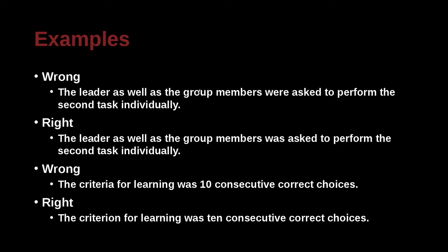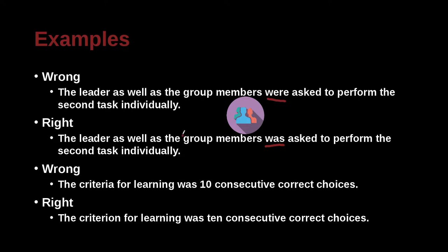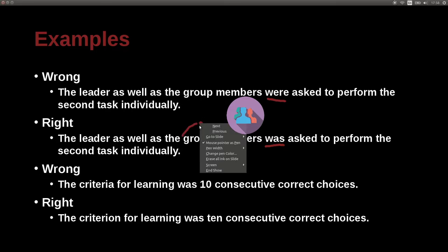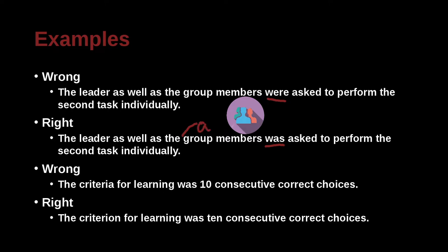'The leader as well as the group members were asked to perform the second task individually' is wrong. The correct version is 'The leader as well as the group members was asked.' You might think: it's the leader and group members, so it's a group of people, right? Yes, and that's the point — it's a group, so as a group they are singular. It was, not they were, because they're all together in one group.